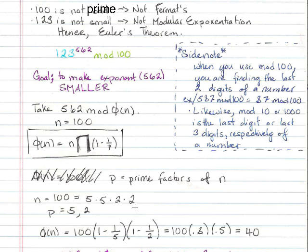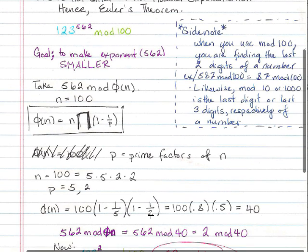We do not need repeats. Again, we do not need the 5 twice. We don't need the 2 twice. Just one of each.